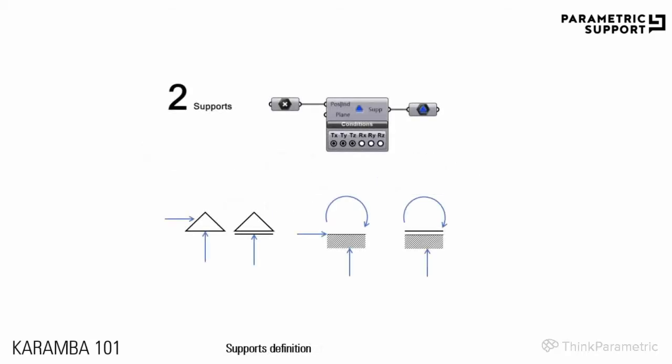In the second step, you have to define the supports. In order to define them, you need to provide points or indexes of the points of the wireframe geometry you used. It works very similar to Kangaroo, so these points have to belong to the wireframe geometry — they must be the ends of the line or the vertices of the mesh. Optionally, you could specify a plane to change the locally oriented support conditions, meaning your support can be attached to a non-flat surface.